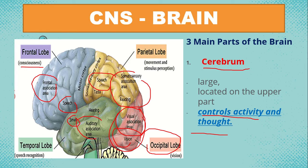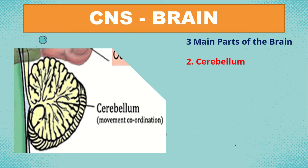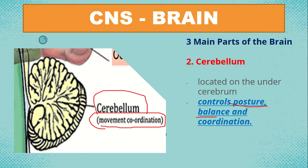The second part, which is second to the largest, is the cerebellum. The cerebellum is located under the cerebrum and it controls posture, balance, and coordination — meaning body movement, how you walk, your posture, how you stand, and the coordination of the different parts of our body.